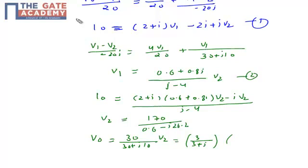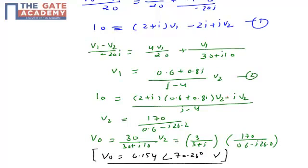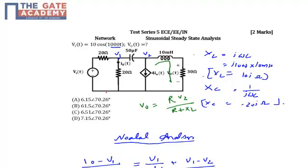It means that my final output expression will be v0 equals 6.154 magnitude with angle of 70.26 degrees. So my correct option will be option A. Thank you.